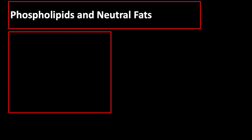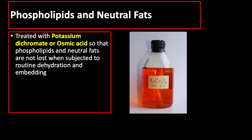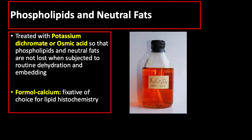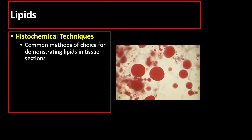Phospholipids and neutral fats will be lost during routine dehydration and embedding. To prevent this, they should be fixed with potassium dichromate or osmic acid. Oxidation of phospholipids by chromate fixation renders them non-extractable by alcohol, toluene, xylene, or paraffin. However, both fixatives greatly alter the chemical reactivity of lipids, which can adversely affect staining. Formal calcium is the fixative of choice for lipid histochemistry, prepared by adding 2% calcium acetate to 10% formalin. Histochemical techniques are the common methods of choice for demonstrating lipids in tissue sections.